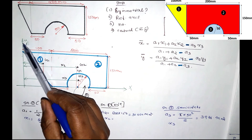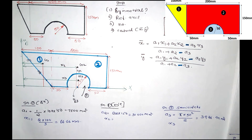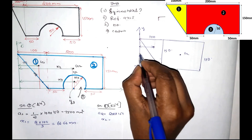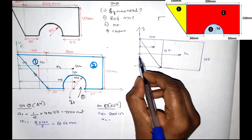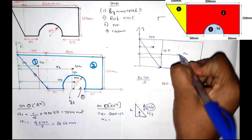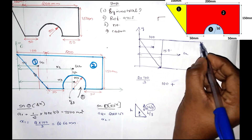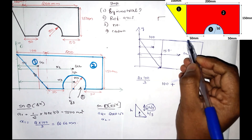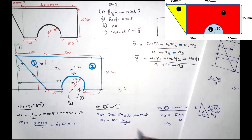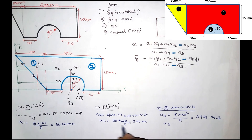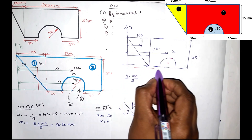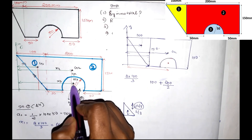Now we have x2 — the center of the rectangle. The rectangle is 200 mm wide and 150 mm tall. The centroid G2 is at the center. The horizontal distance x2 = 100 + 200/2 = 100 + 100 = 200 mm.